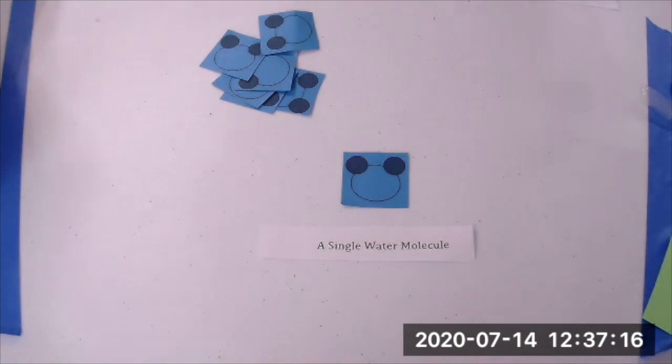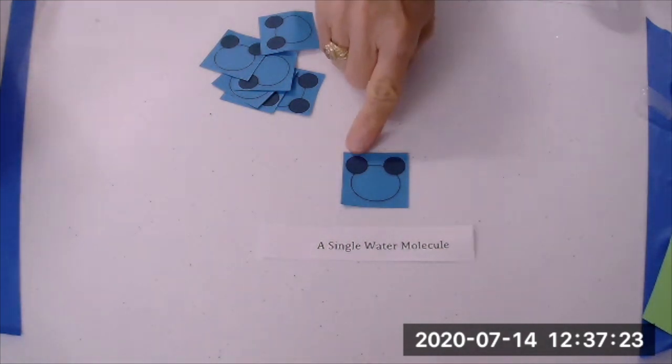The chemical formula for water is H2O. Water is made of two elements, hydrogen and oxygen.